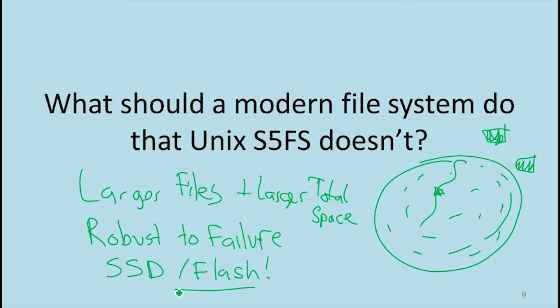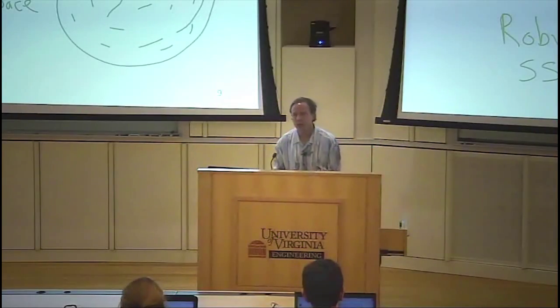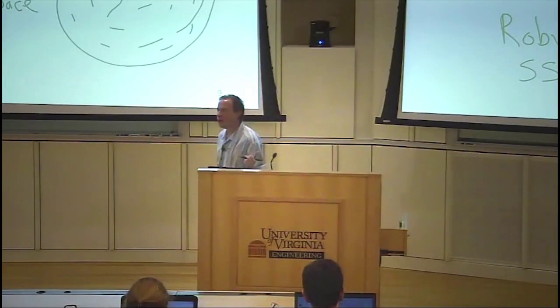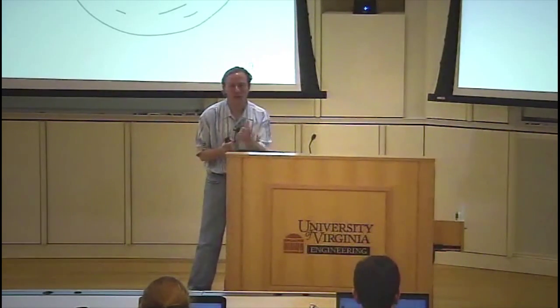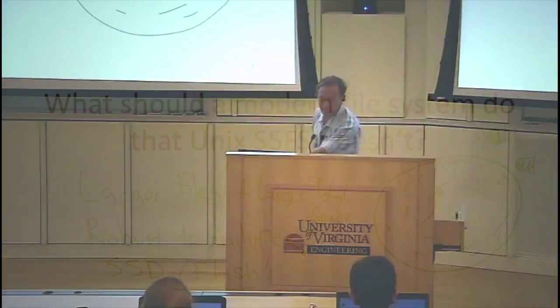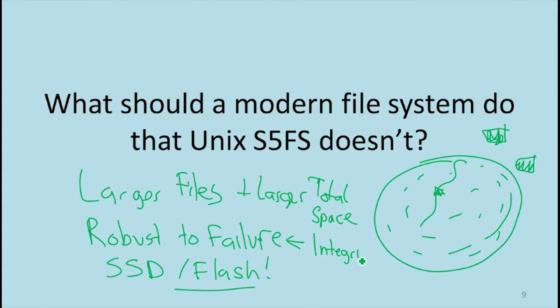Part of robustness to failure is not just that you can recover things, but that you know when there's been a failure. The worst kind of failure for many systems is if the data on your drive gets silently corrupted and you don't know — you open your spreadsheet with your five-year business plan and some values have changed, but no one notices. That's a robustness concern, but more precisely it's integrity: we want to know that the values we write on disk are the ones we read back.